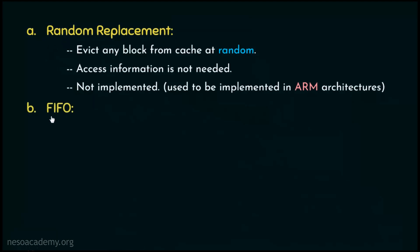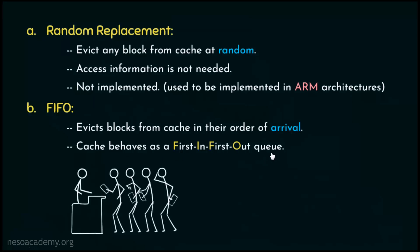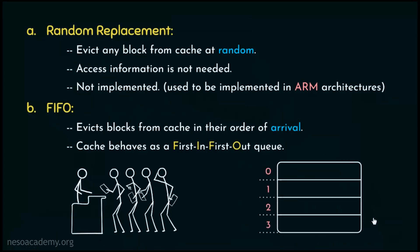The next replacement policy is FIFO. Here, the cache blocks are evicted in their order of arrival — the cache behaves as a first-in-first-out queue. That means whichever block comes in first will be evicted from the cache first. To understand this with an illustration, suppose we have a fully associative cache with 4 different lines, and initially the cache is empty. Since it is fully associative, for the first 4 block requests the cache will be filled accordingly. At this point, the cache is full.